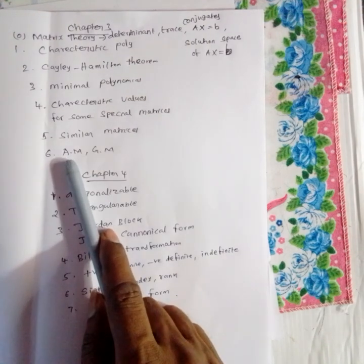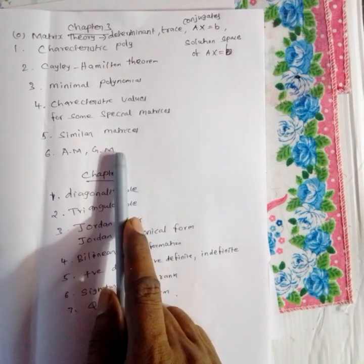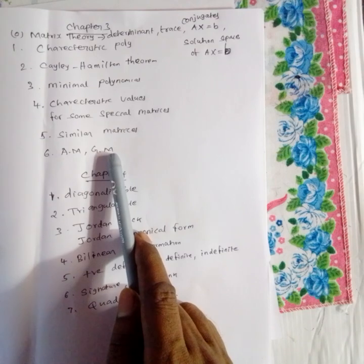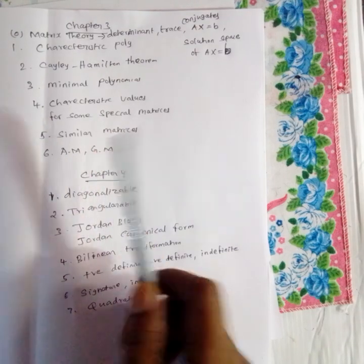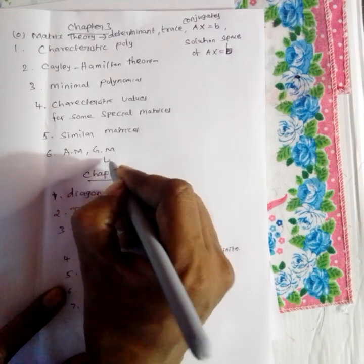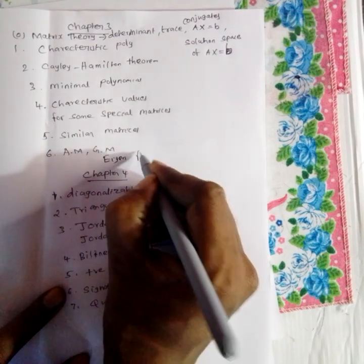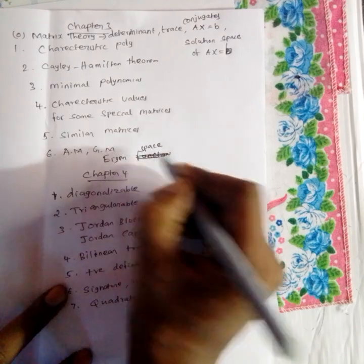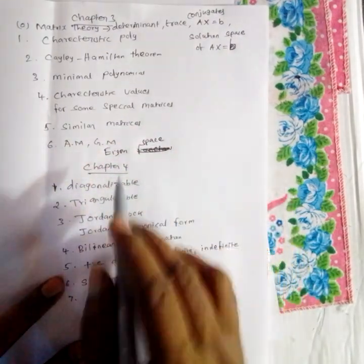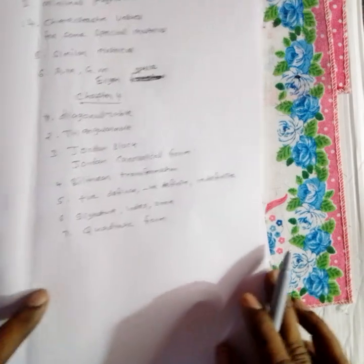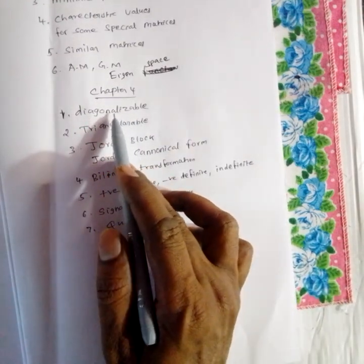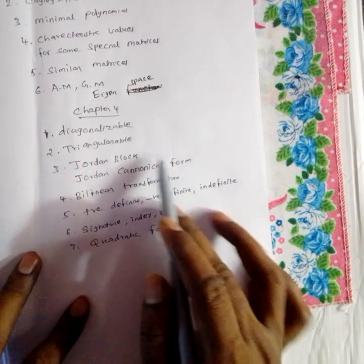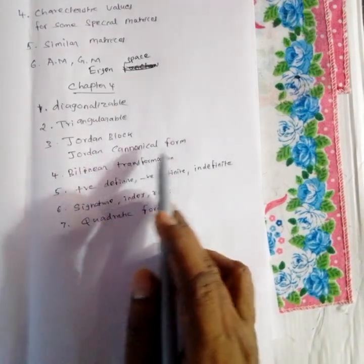Algebraic multiplicity and geometric multiplicity. Eigenspace corresponding to a characteristic value — this is the diagram. Diagonalizable: a matrix is diagonalizable. That is the AM equals GM standard result. Triangularizable — that is the Jordan block. Jordan canonical form — it is very important.